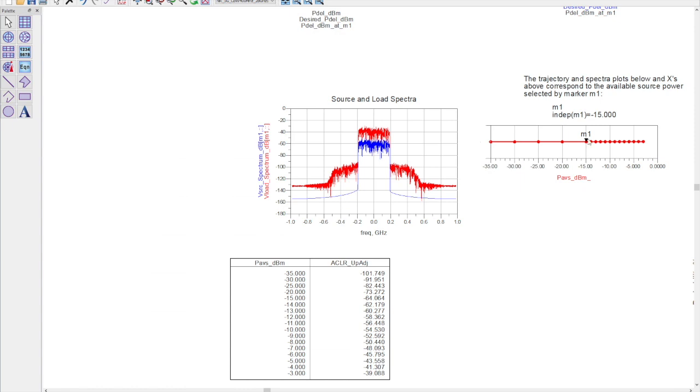At low power levels the PA generates very little distortion but as we increase the input power, the power in the adjacent channels starts to increase, as we'd expect.